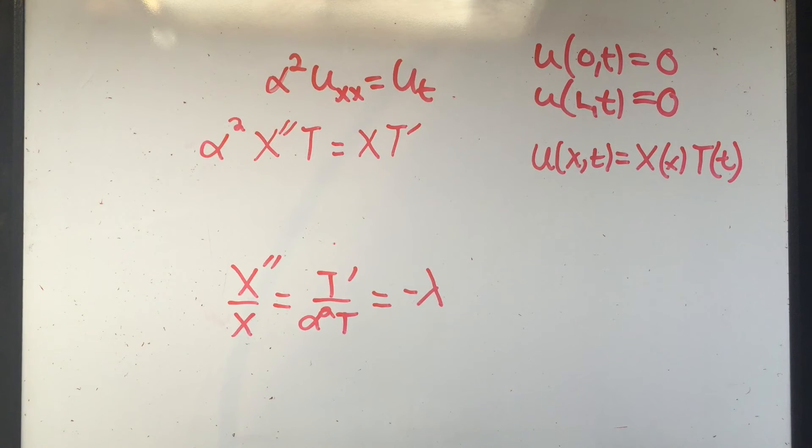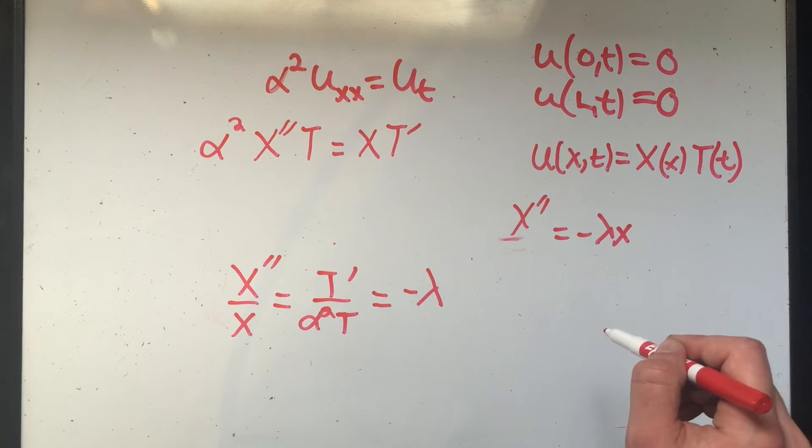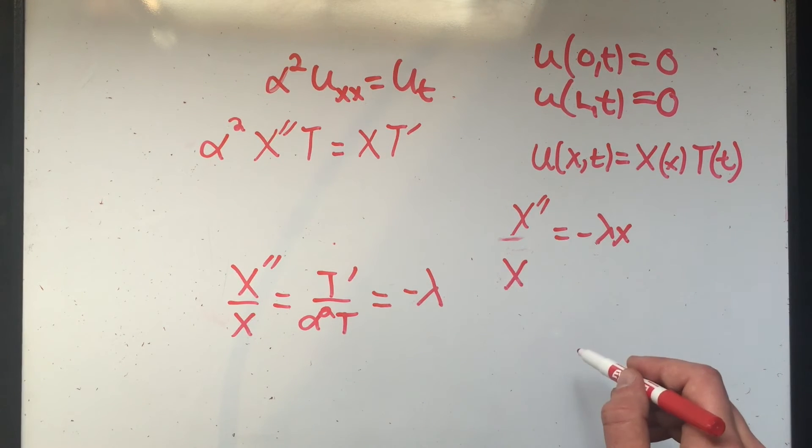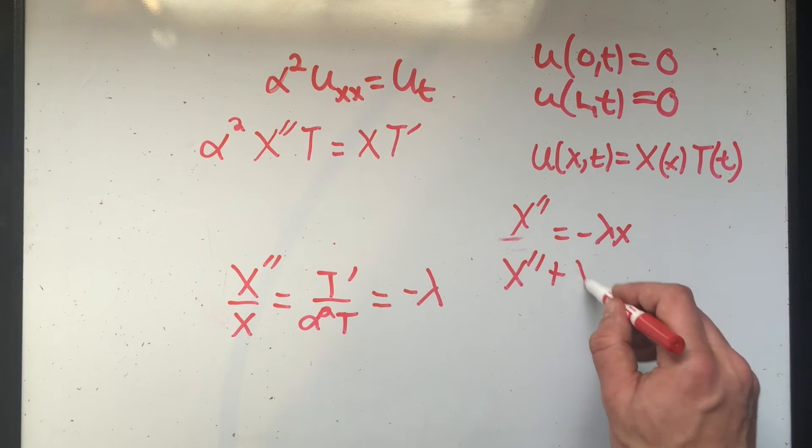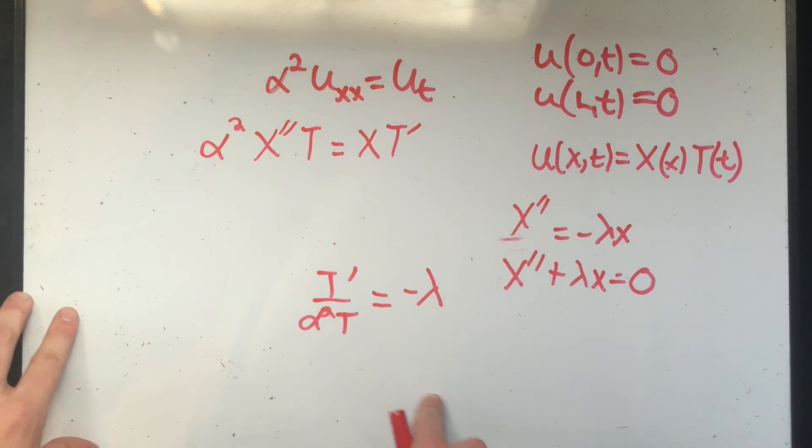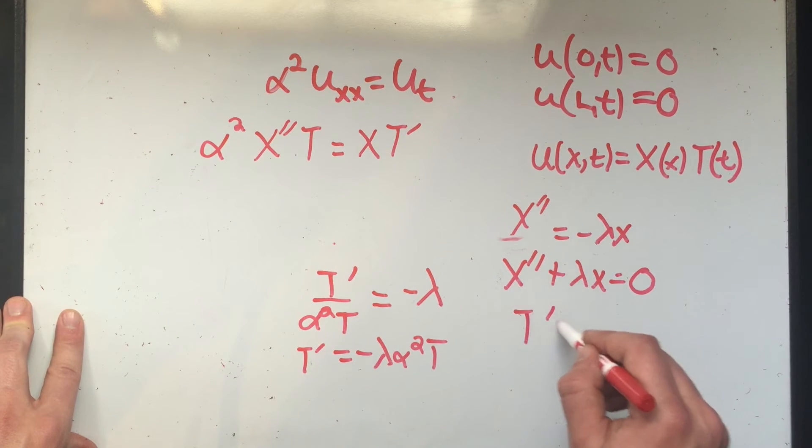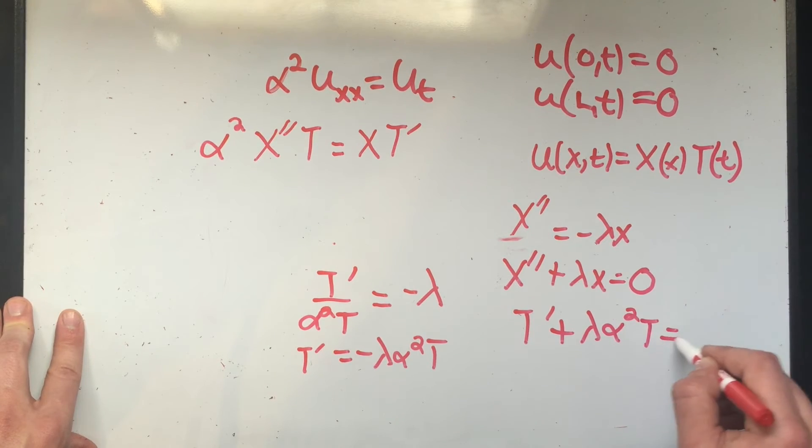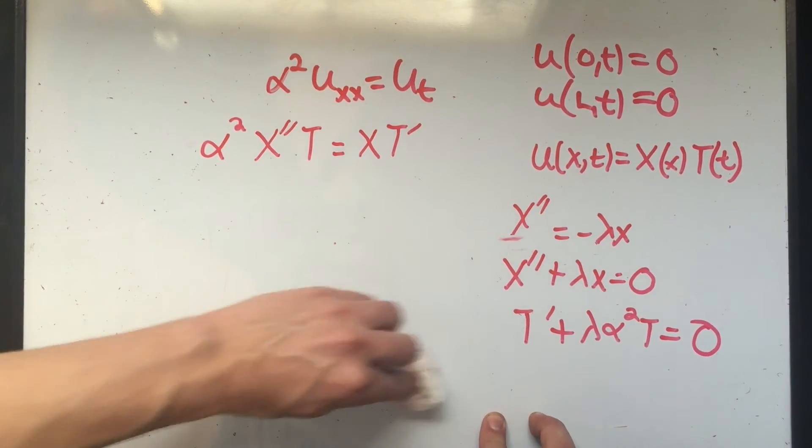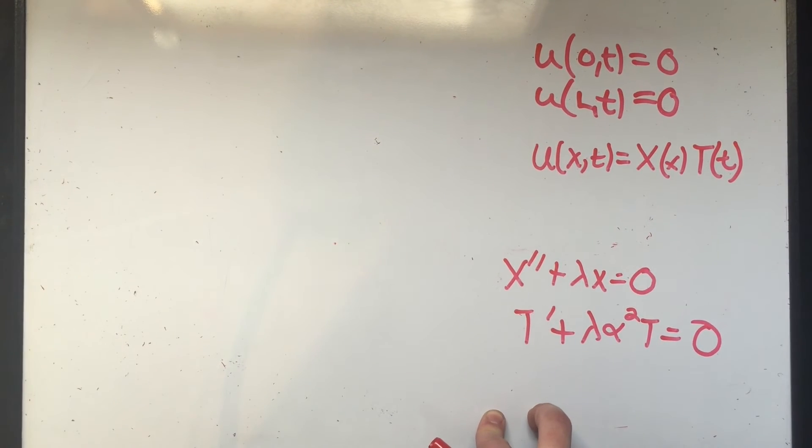Now, if I take just this first part and the lambda part, I'd have X double prime over X equals minus lambda. Or if I multiply both sides by X and then add the minus, or if I add lambda X, I get X double prime plus lambda X equals zero. And if I take this part and I multiply both sides by alpha squared T, I get minus lambda alpha squared T, or that I get T prime plus lambda alpha squared T equals zero.